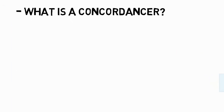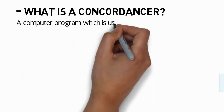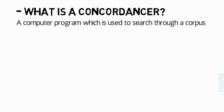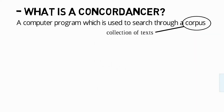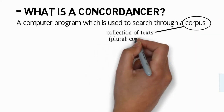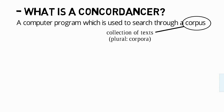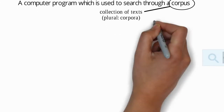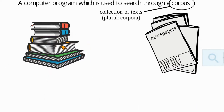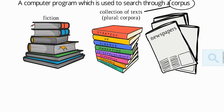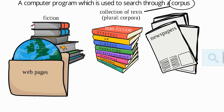What is a concordancer? A concordancer is a computer program which is used to search through a corpus. A corpus is a collection of texts — the plural of the word is corpora — and these texts can be grouped according to many different classifications. So it could have a corpus for newspaper articles, a corpus for fiction, a corpus for non-fiction texts, a corpus of web pages, as well as corpora for academic English, which could be spoken academic English.